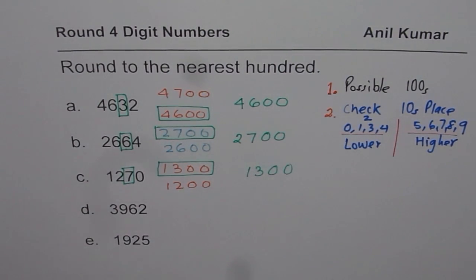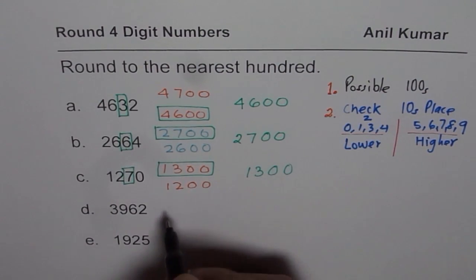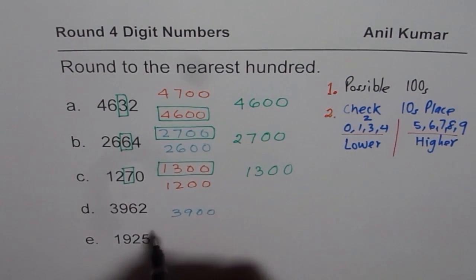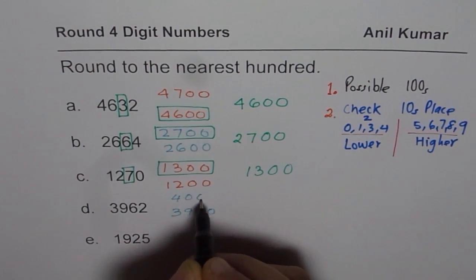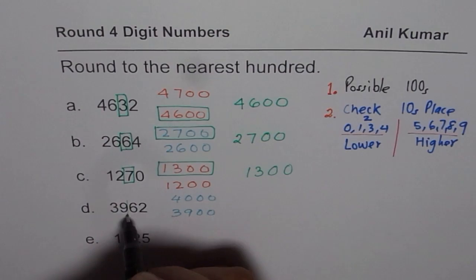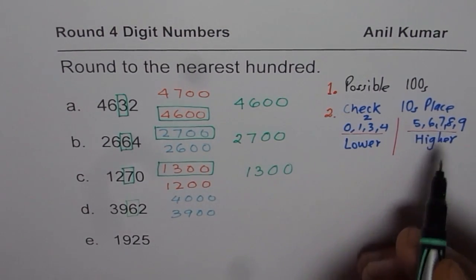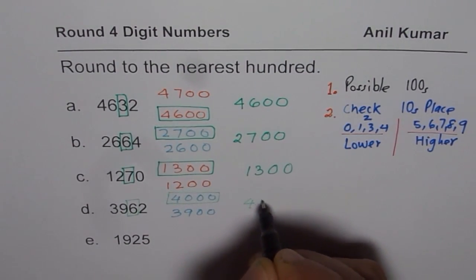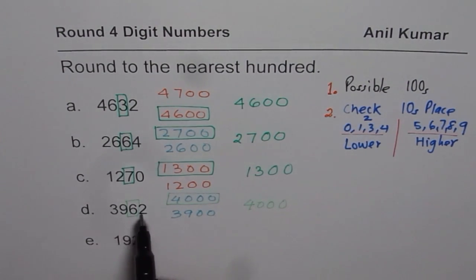3,962 is between which two hundreds? 3,900, and one more hundred makes it 4,000. This is tricky. It is between 3,900 and 4,000. Check the number in tens place. It is 6, meaning higher number. Take the higher option. 4,000 is the number to which 3,962 should be rounded.